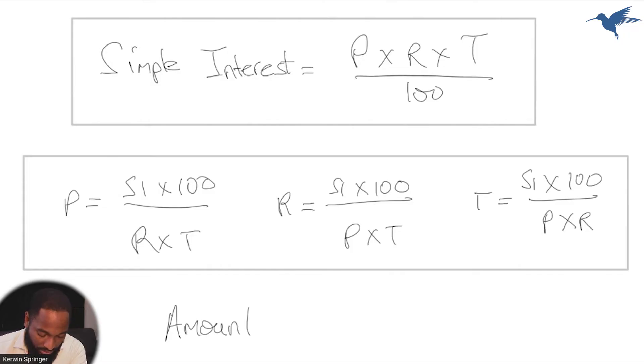There's one more formula that is sometimes overlooked. The amount is the simple interest plus the original value, the principle. So the final amount, that word amount is key there. When they ask amount, they're talking about how much you put plus the interest it gathered, or how much you borrowed plus the interest that it gathered.